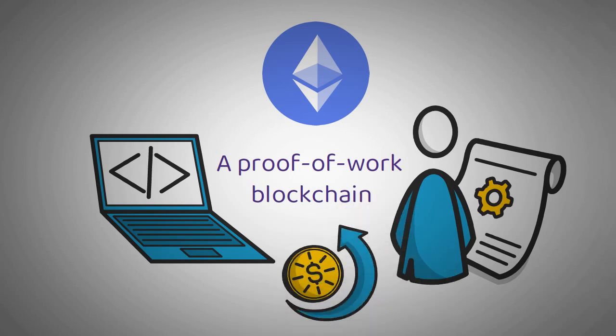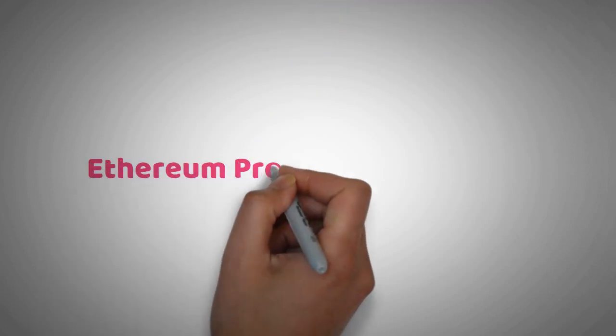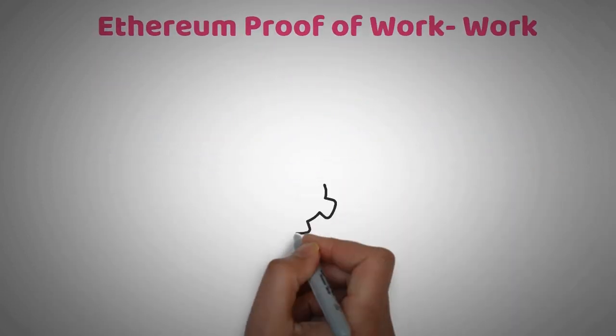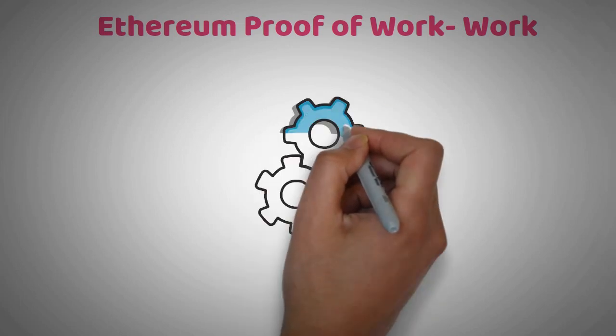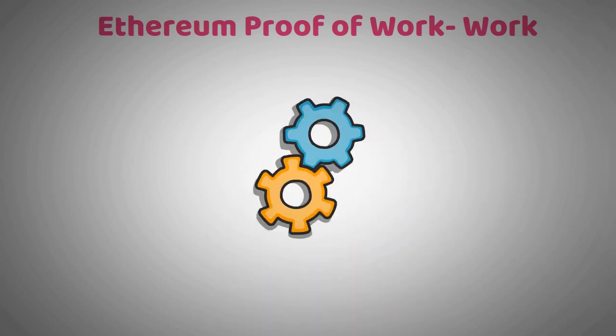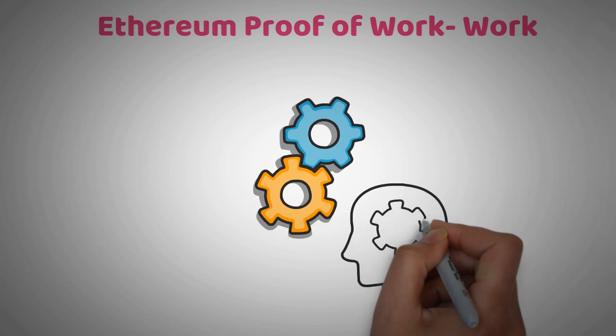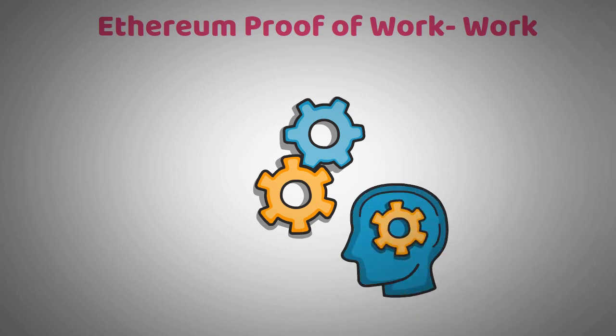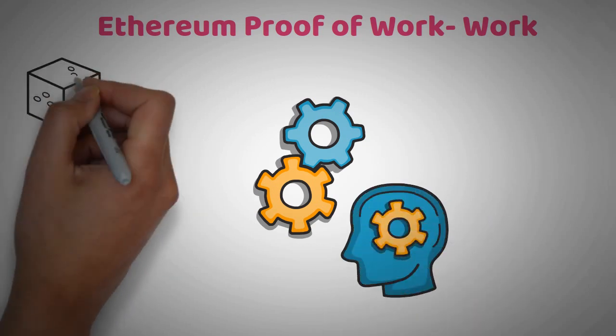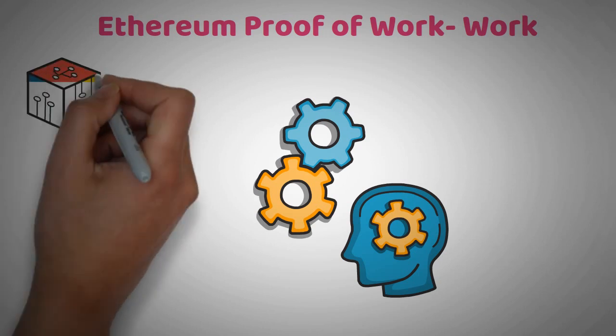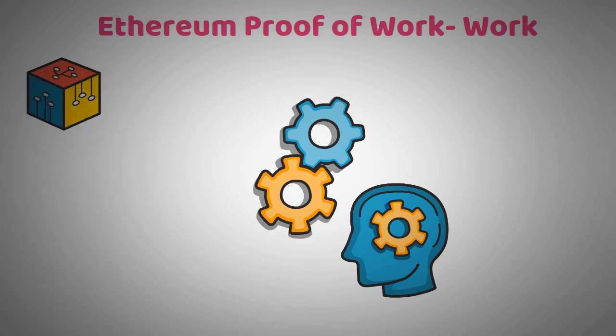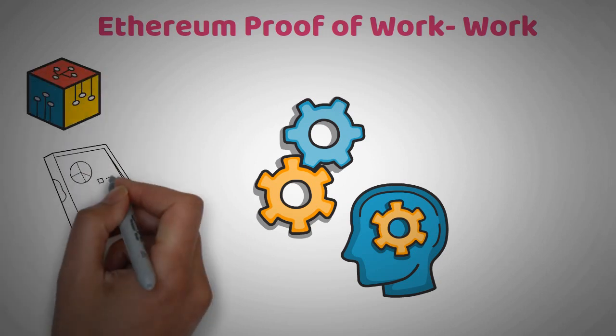But how does Ethereum proof-of-work work? Proof-of-work is a consensus mechanism. So to understand how Ethereum proof-of-work works, you must know how consensus mechanisms function in crypto. Let's explain this with an analogy. Think of the blockchain as a database that stores information. Like all databases, there must be a system put in place to help govern it.